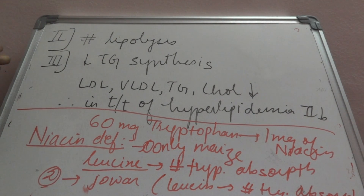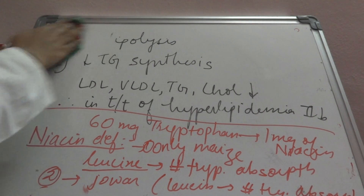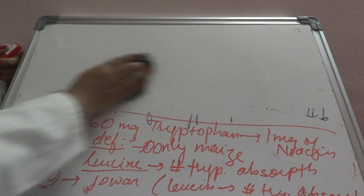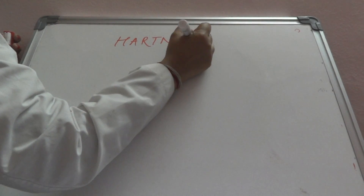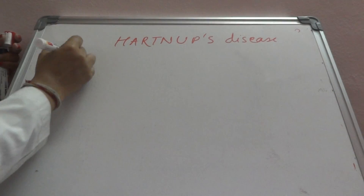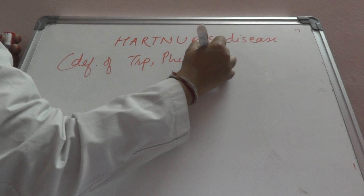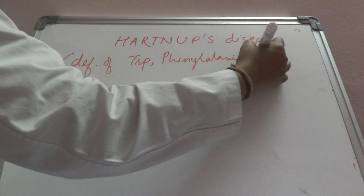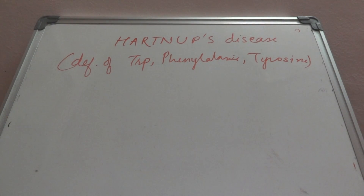Another cause is Hartnup disease, where there is deficiency of tryptophan, phenylalanine, and tyrosine. Because there is deficiency of tryptophan, there is less or no production of niacin, and it leads to a condition like pellagra.